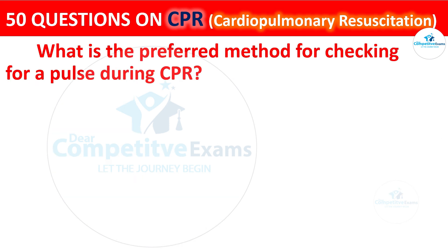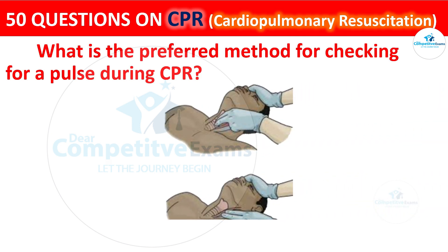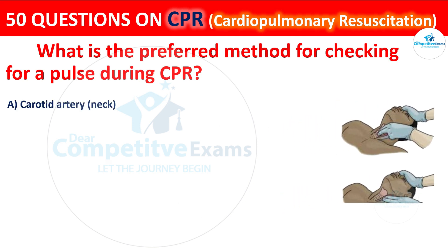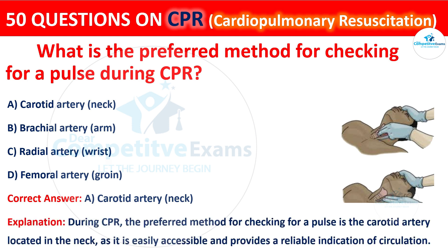Question 46: What is the preferred method for checking for a pulse during CPR? The options are: carotid artery (neck), brachial artery (arm), radial artery (wrist), or femoral artery (groin). The correct answer is A — carotid artery (neck). During CPR, the preferred method for checking for a pulse is the carotid artery, located in the neck, as it is easily accessible and provides a reliable indication of circulation.